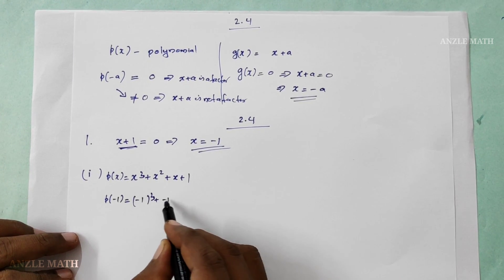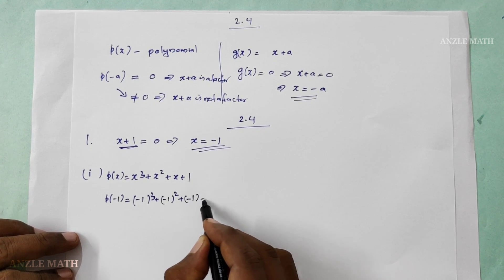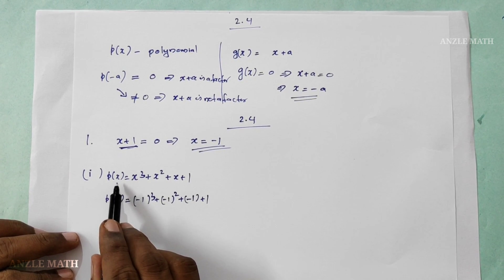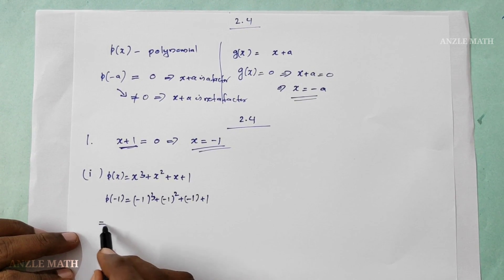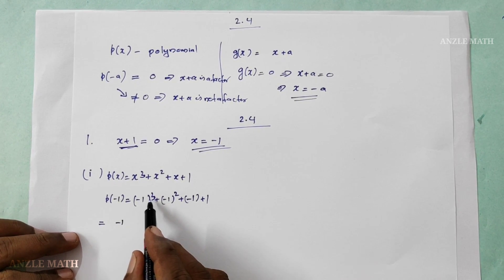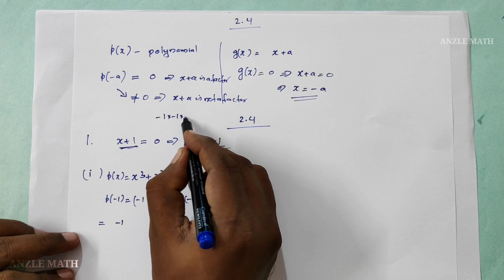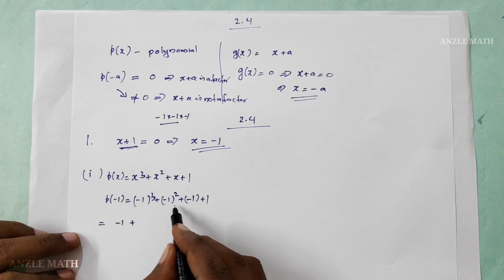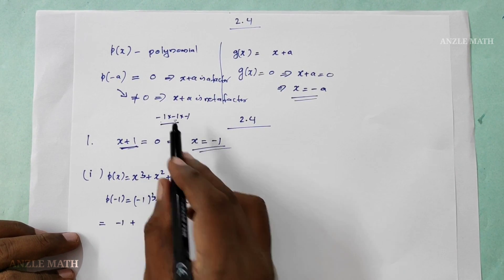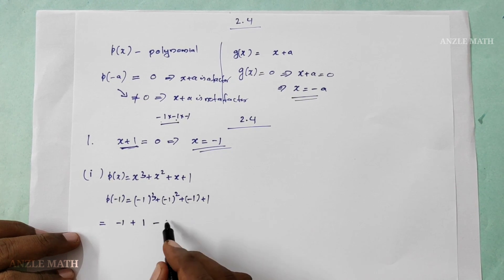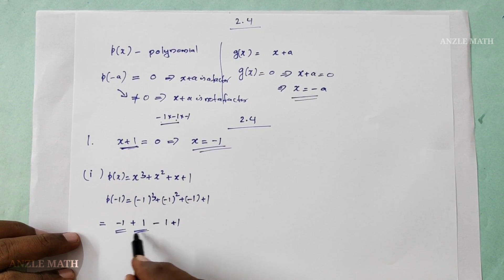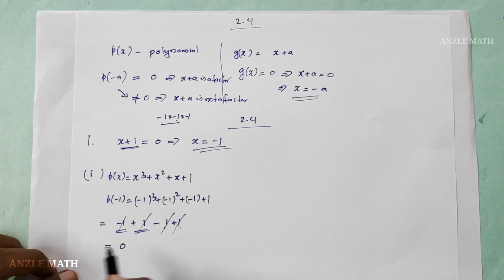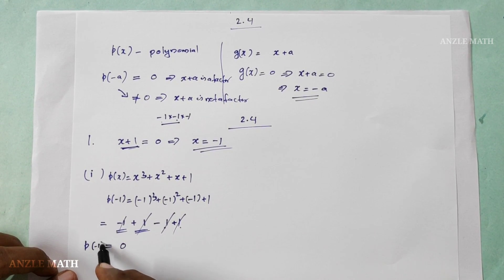Minus 1 whole cube plus minus 1 whole square plus minus 1 plus 1. So, if we get the value of x: minus 1 whole cube equals minus 1 into minus 1 into minus 1; minus 1 into minus 1 is 1, into minus 1 is minus 1. Plus minus 1 whole square: minus 1 into minus 1 is plus 1. Plus minus 1 plus 1 — these cancel. Therefore p of minus 1 equals 0.